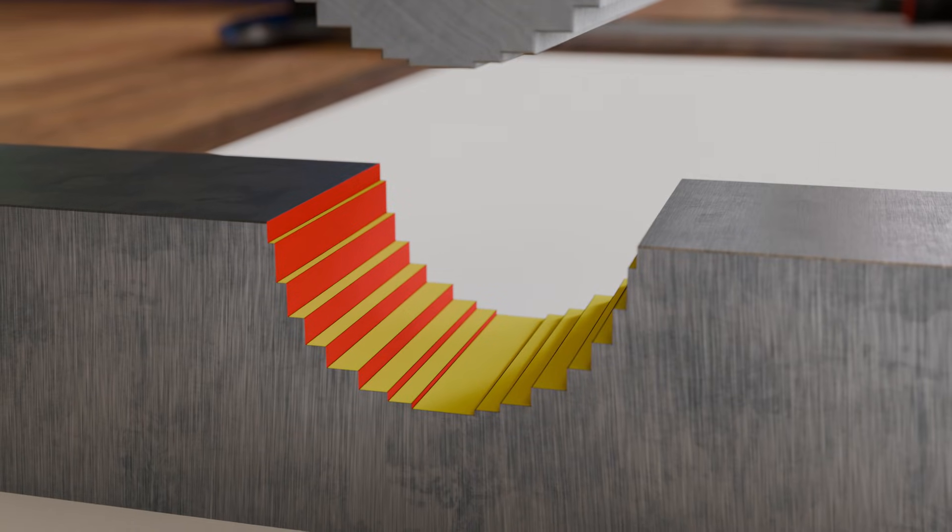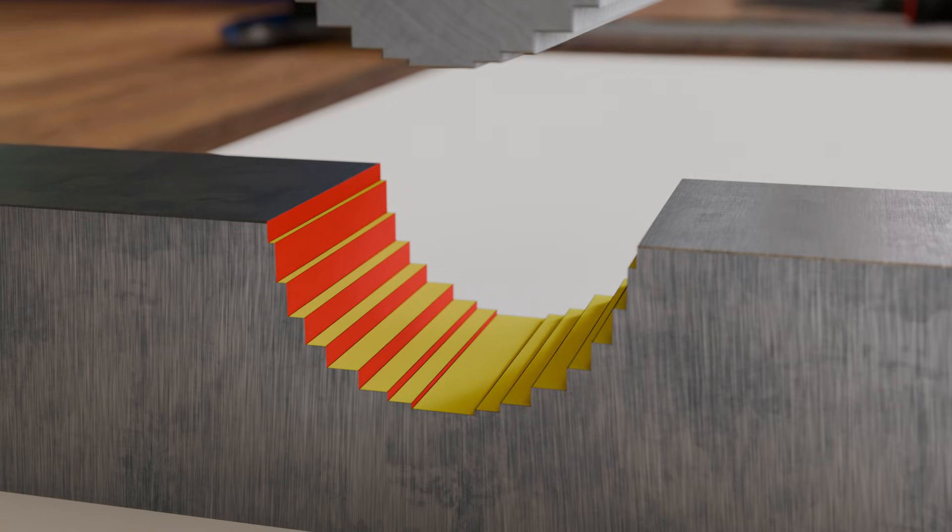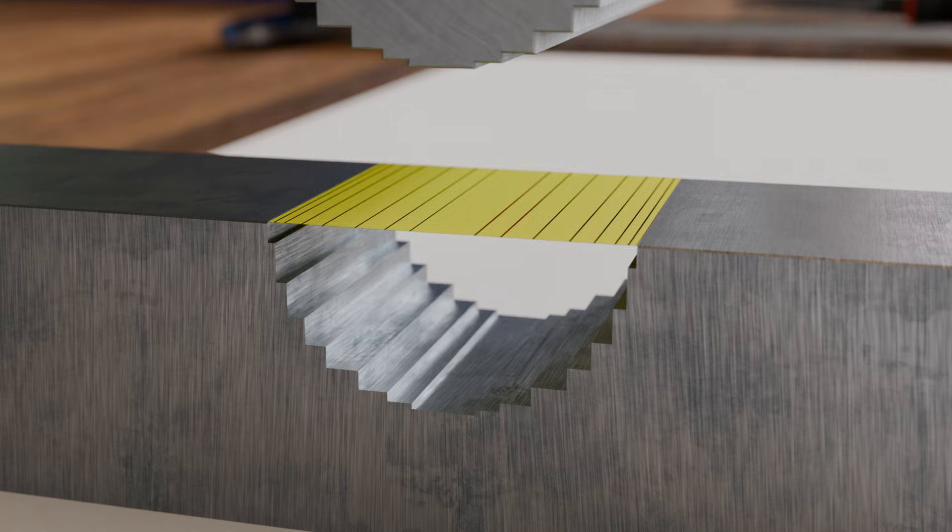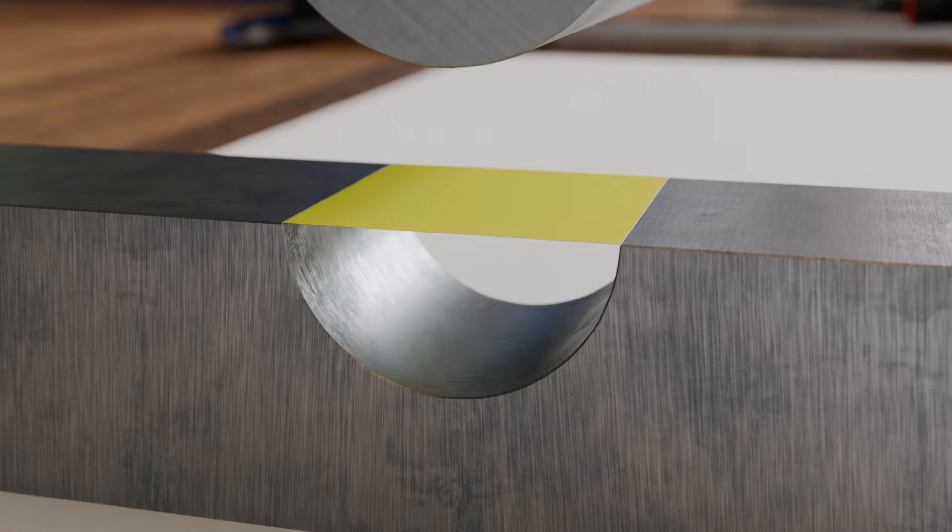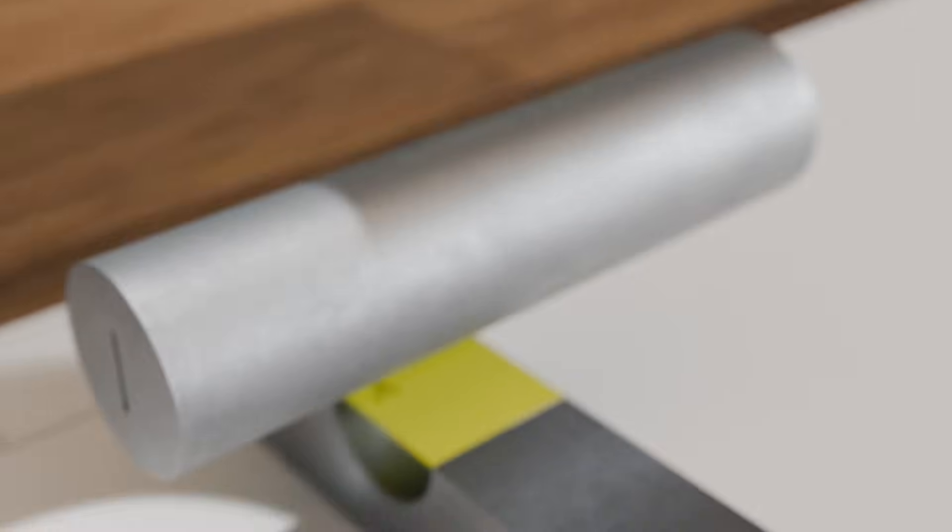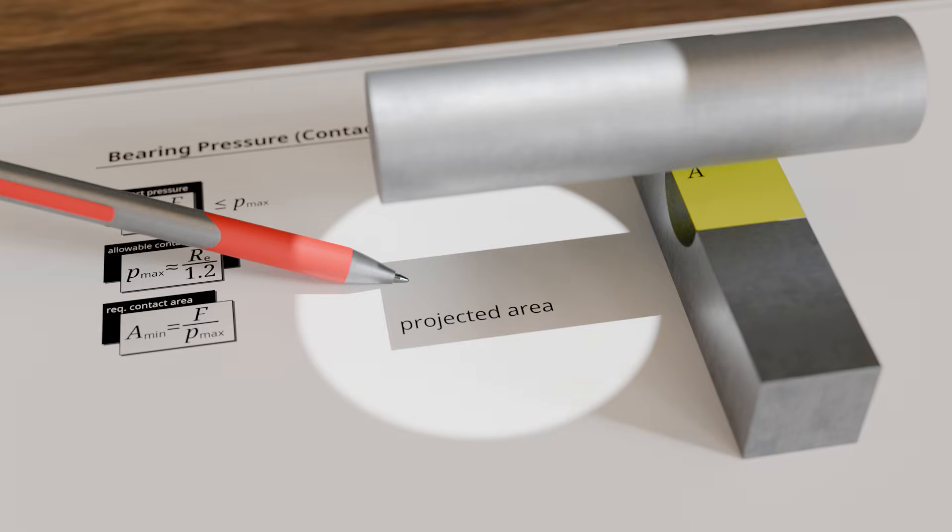For calculating bearing pressure, only those surface portions that act in the direction of the force are relevant. That is, the area projected in the direction of the applied load. This projected area can be visualized as the shadow cast on a flat surface when the loaded object is illuminated by a flashlight.